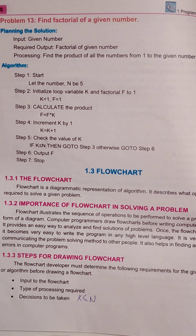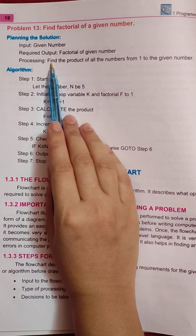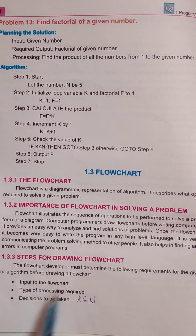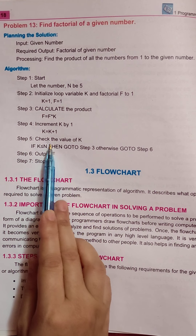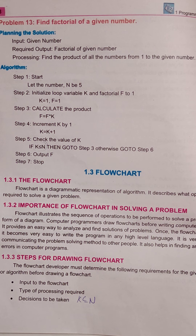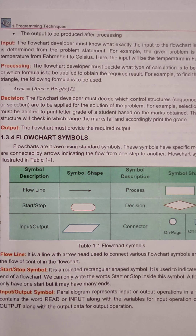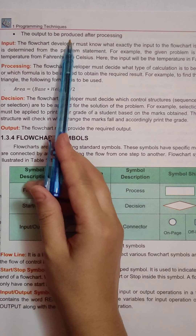When drawing a flowchart, you must properly use the correct symbol for input — using the wrong symbol is incorrect. You have to show what type of processing is required to find a product of all numbers from 1 to a given number. The decision to be taken is if k is less than or equal to n. The last step is the output to be produced after processing — when you process, the output must be given to the user. For example, 2 plus 5 gives output 7.